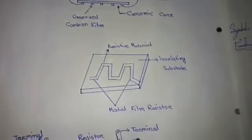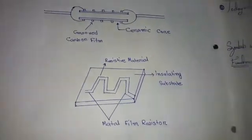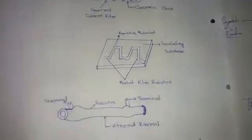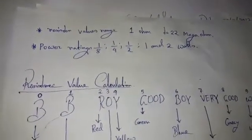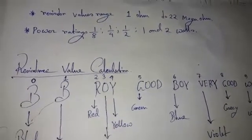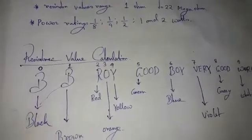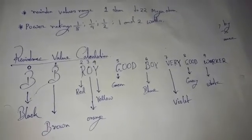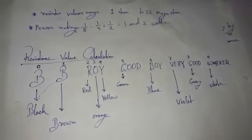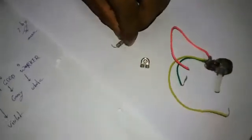If you want to see the type of resistance, you need to check the power rating. The power ratings are 1/8W, 1/4W, 1/2W, 1W, and 2W. But the higher level can go up to 120W. For balance, the typical values are 1/4W, 1/2W, 1W, and 2W.